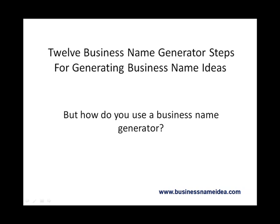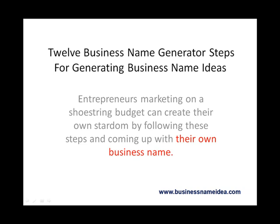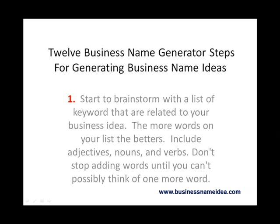Entrepreneurs marketing on a shoestring budget can create their own stardom by following these steps and coming up with their own business name. Step one: start to brainstorm with a list of keywords that are related to your business idea. The more words on your list the better — include adjectives, nouns, and verbs. Don't stop adding words until you can't possibly think of one more word.